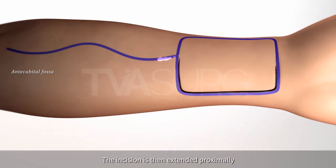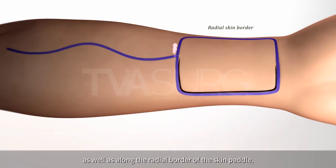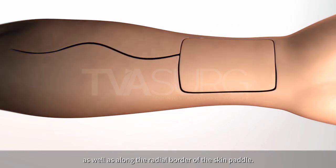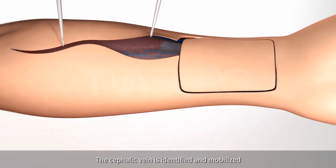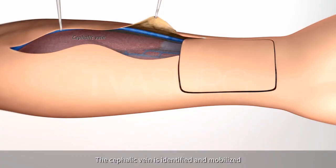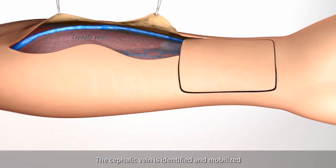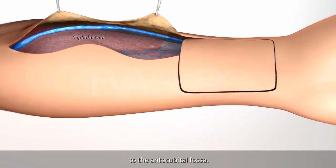The incision is then extended proximally towards the antecubital fossa, as well as along the radial border of the skin paddle. The cephalic vein is identified and mobilized from the proximal border of the skin paddle to the antecubital fossa.